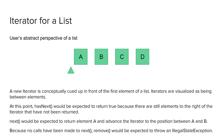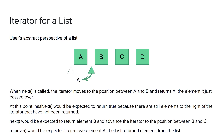If I call next, I expect the iterator to return the next element and advance to the next position. Because no calls have been made to next yet, if I call remove I would expect an IllegalStateException. When next is called, the iterator moves from being in front of a to being in between a and b, and afterward it returns the a that it just passed over. So next has not only returned the next element but moved its position so that now it's in front of element b. hasNext would still return true because there are still elements the iterator hasn't returned. If I call next again, I would expect the iterator to advance to the next in-between position and return b.